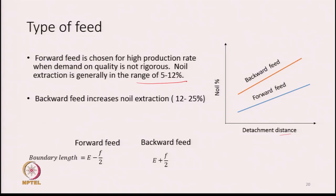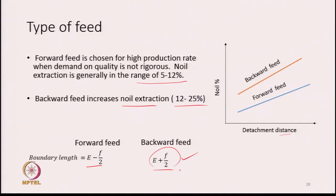When we need more waste to be extracted, we go for backward feed. In terms of boundary length: for a given E and F, boundary length is less in forward feed so waste is less. In backward feed, boundary length is more so waste is more. More waste automatically means less production; less waste means more production.